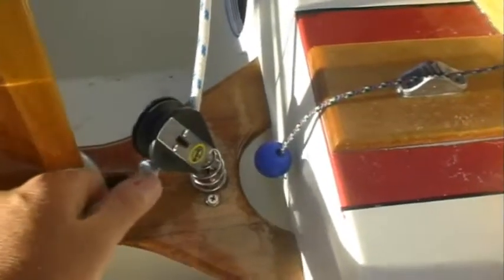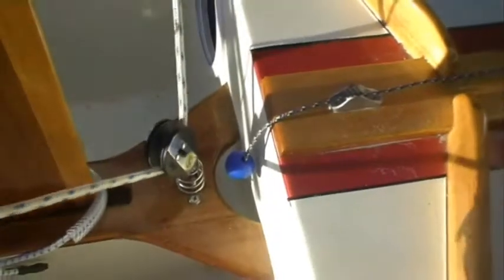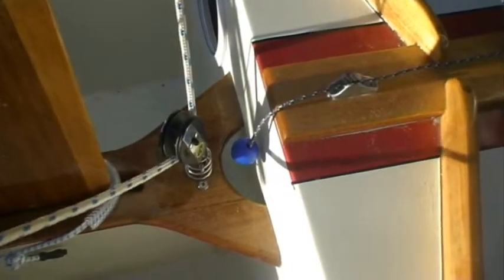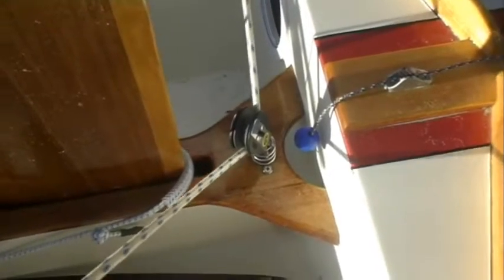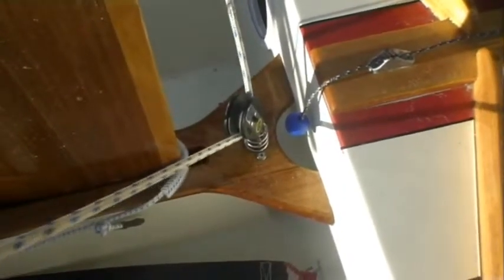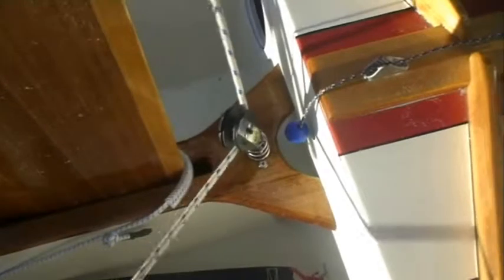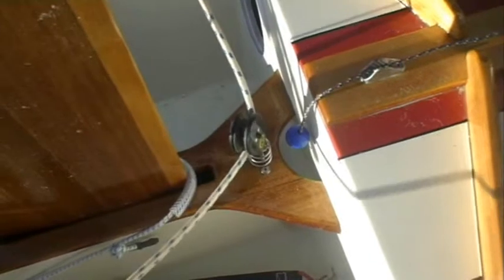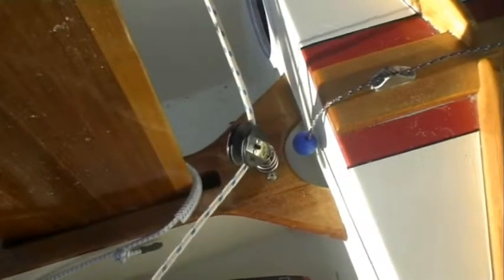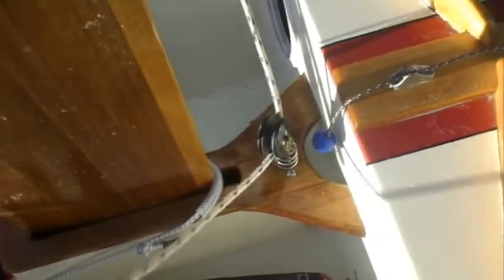The main sheet block we're using is a ratchet one. So as I pull it you can hear the ratchet working. It means that the block only smoothly runs one way, provides 10 to 1 resistance. So if you've got 2 kilos pulling on this end of the line, it can resist 20 kilos pulling on the main sheet on the other side of the block. It's quite good for kids, makes it a little bit easier to hold on in hard weather.